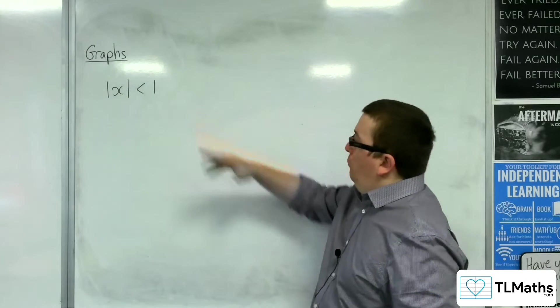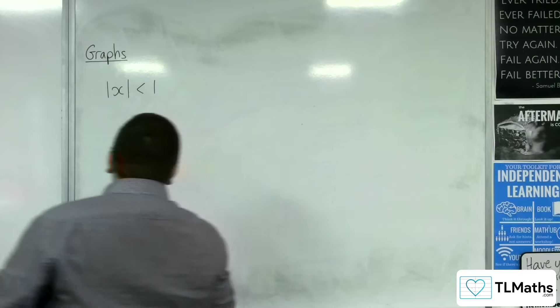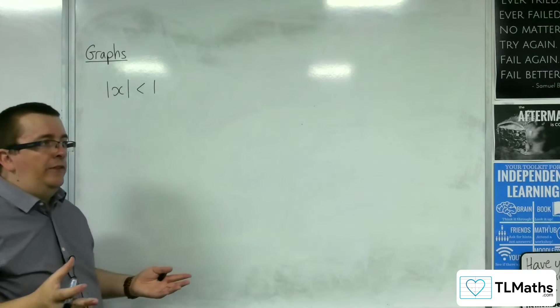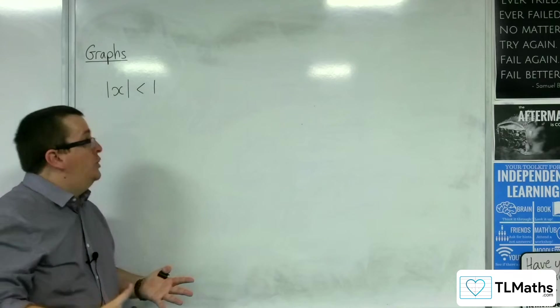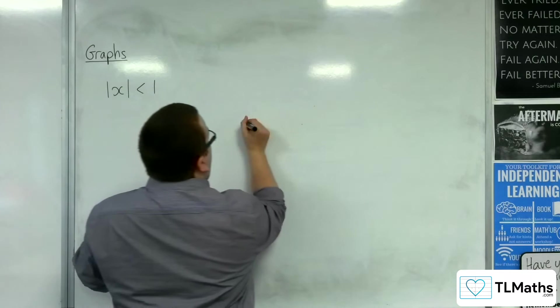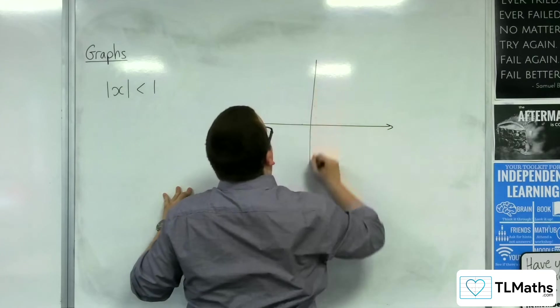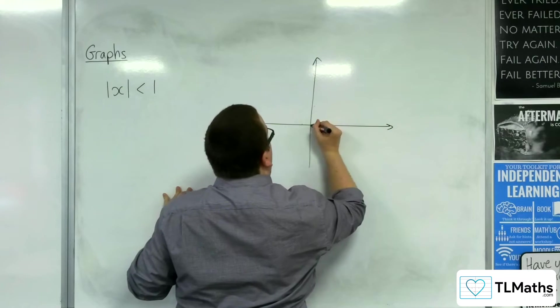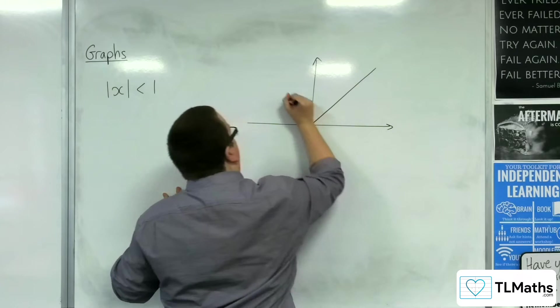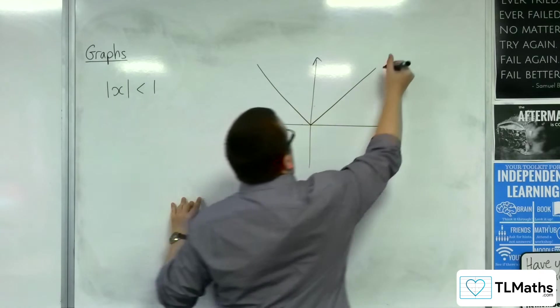So let's say we've got this problem here, and if we were trying to solve this using our method of sketching, what we would do is we would sketch the modulus of x, y equals mod x, which looks like this. So that's y equals mod x.